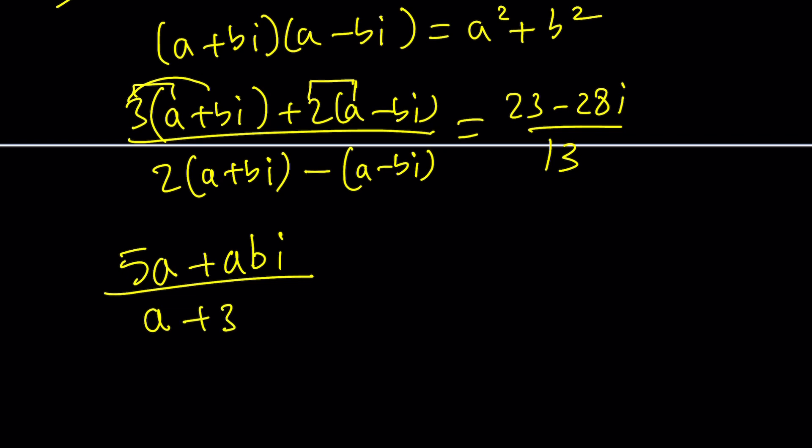and that is divided by 2a minus a and then 2bi plus bi that's 3bi. Wait a minute it's not abi it's just bi. I don't know how I came up with the abi. A plus 3bi. Okay here we go. That's equal to this.